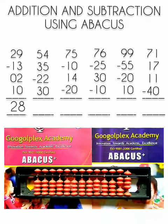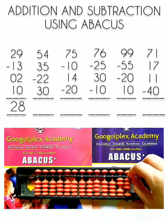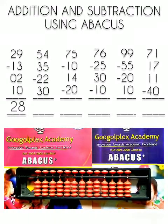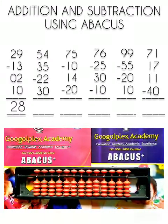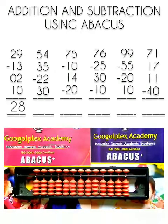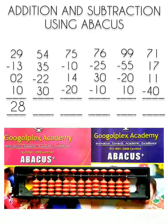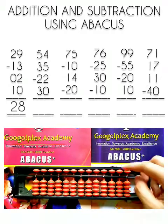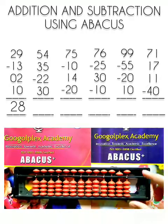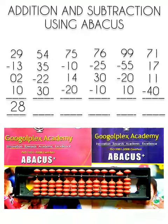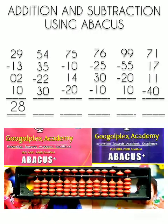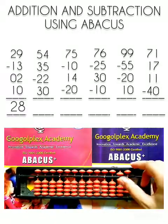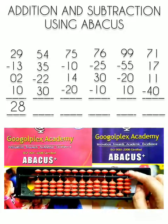28 is our answer. Now coming to the second question. In the second question we have to solve 54 plus 35 minus 22 plus 30. First number is 54. This is 50 and this is 4. Now we have to add 35 to this number. This is 30, 10, 20, 30 and this is 5.